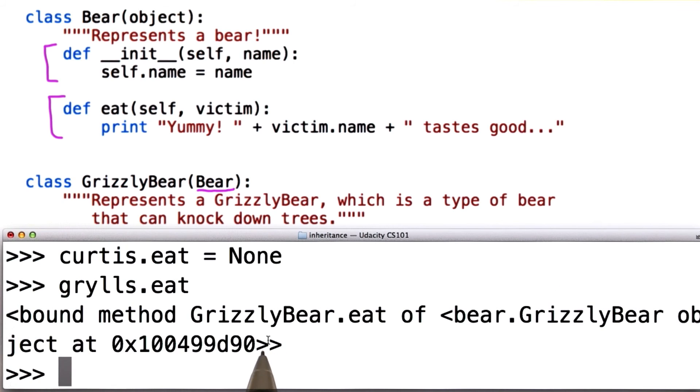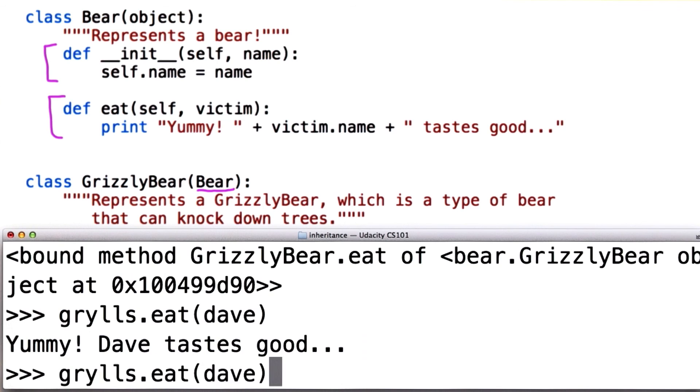The eat method for grizzly is still there. That method got bound when the grizzly bear instance was created, and the grizzly bear can still eat Dave as many times as he wants.